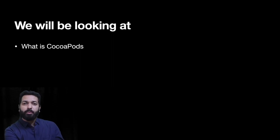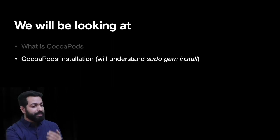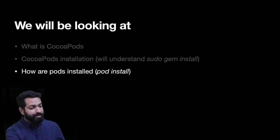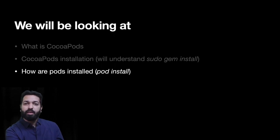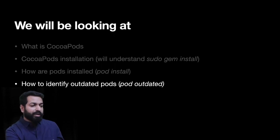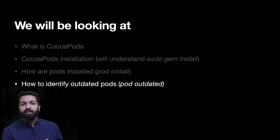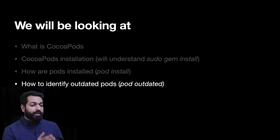We will see what CocoaPods is, because people generally confuse the two things: pods and CocoaPods. We will see how it can be installed — we know that sudo gem install CocoaPods is the command, but why do we use sudo? What is gem install? We'll understand that. Then we will see how pods are installed and what happens when we run the command pod install. How can we identify outdated pods? There's already a command — pod outdated — so no need to Google for new versions.